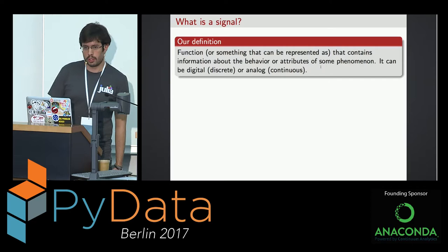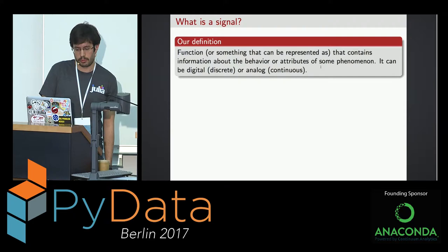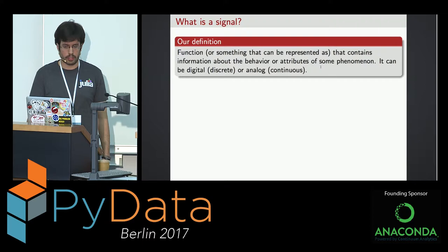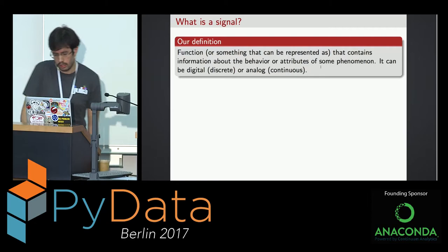First of all, we want to know what is our definition of signal. This is a quite informal but still mathematical definition: a signal is a function, or something that can be represented as a function, that contains information about the behavior and attributes of some phenomenon. The key word is it contains information. Things that contain no information, like white noise, are not a signal.